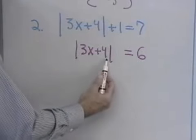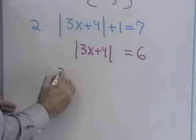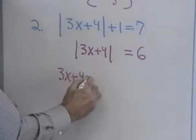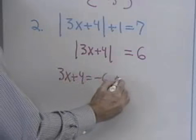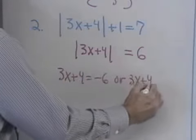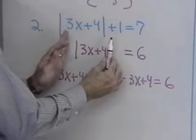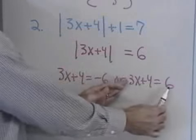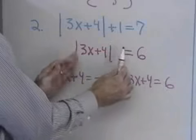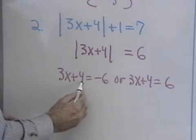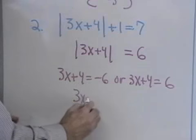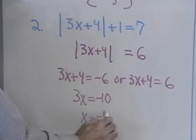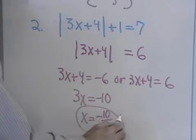Now, the only way the absolute value of 3x plus 4 can be equal to 6 is if 3x plus 4 is negative 6, or 3x plus 4 is equal to positive 6. Those are the only two numbers whose absolute value is 6. Solving this equation, I add negative 4 to both sides and end up with negative 10. Divide both sides by 3, and I get x is equal to negative 10 thirds. There's one solution.